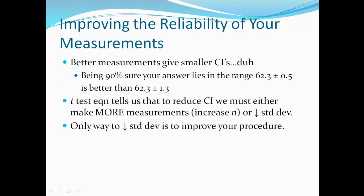So the t-test equation tells us that to reduce the confidence interval, we must either make more measurements, which is probably the easiest, or decrease your standard deviation. The only way to decrease your standard deviation is to improve your procedure, which sometimes can be really difficult. Another way is just to make more measurements. Let's move on.